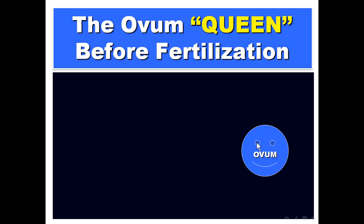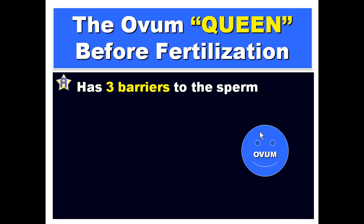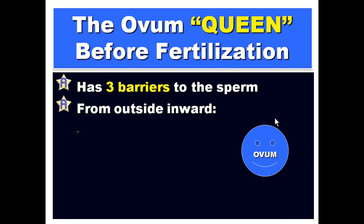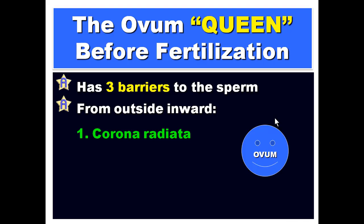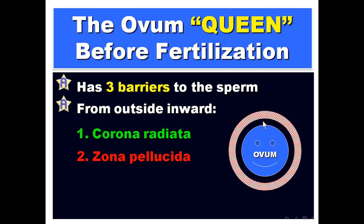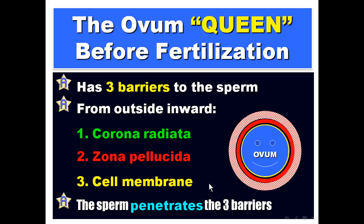How does the ovum look like before fertilization? The ovum is surrounded by three barriers. From outside inward: the first barrier is the corona radiata, the second barrier is zona pellucida, and the third barrier is the cell membrane. The sperm has to penetrate these three barriers — first corona radiata, then zona pellucida, then cell membrane.